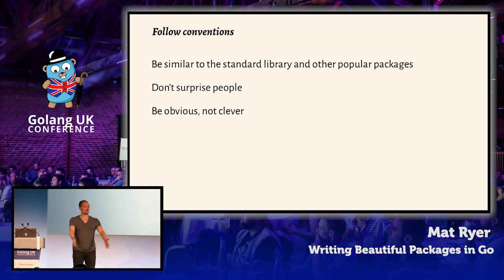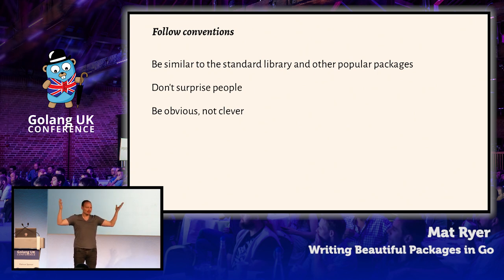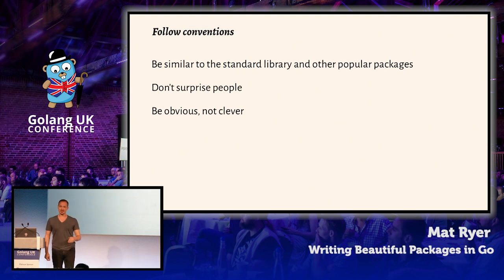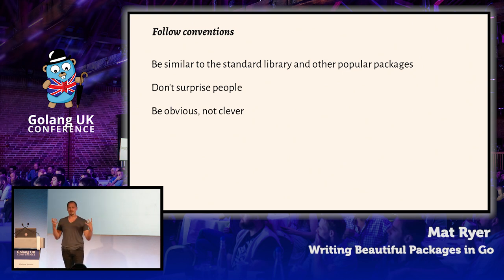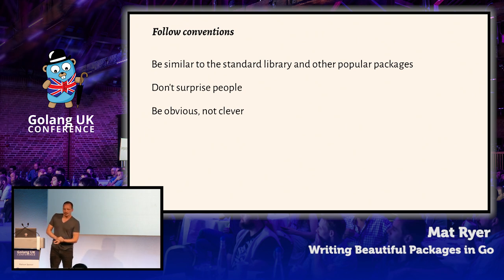Follow conventions and be similar to each other in code. Don't surprise people. We do want to be creative and show off that we're smart and cool, but don't make it clever — make it obvious, because you can be creative in different ways that actually end up mattering a lot more. Be obvious, not clever.